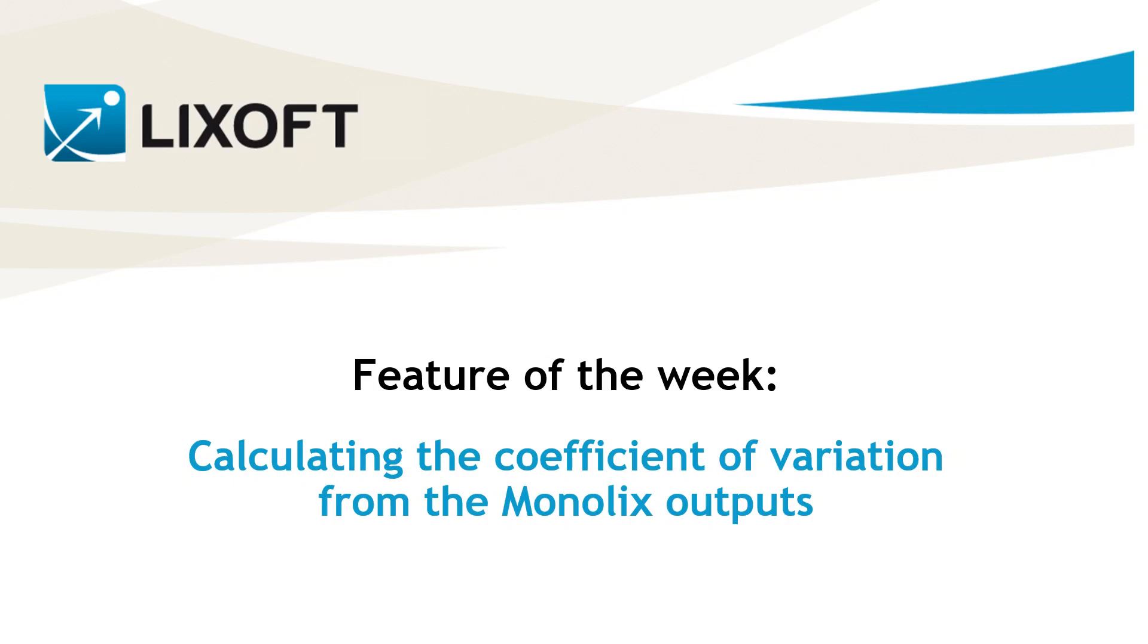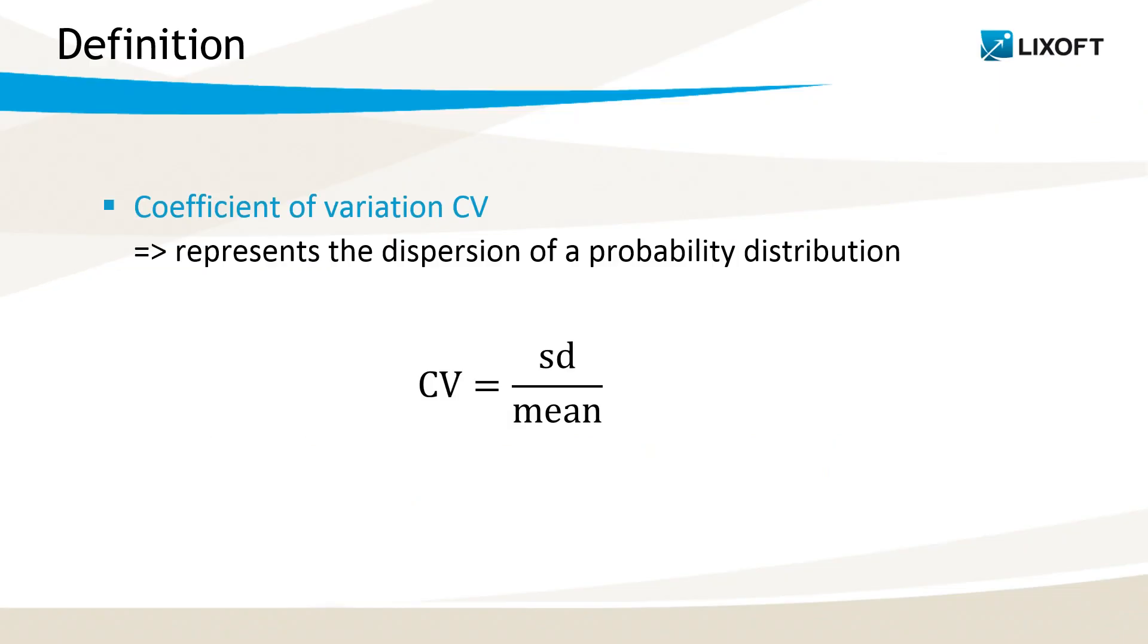Today I will explain how to calculate the coefficient of variation from the Monolix outputs. The coefficient of variation represents the dispersion of a probability distribution. It is defined as the ratio of the standard deviation divided by the mean of the distribution.